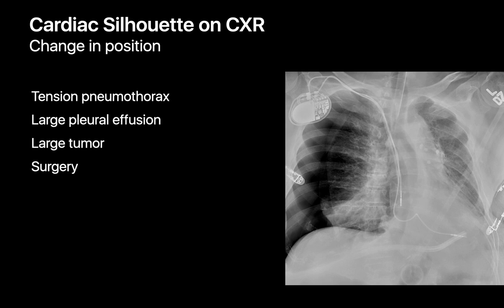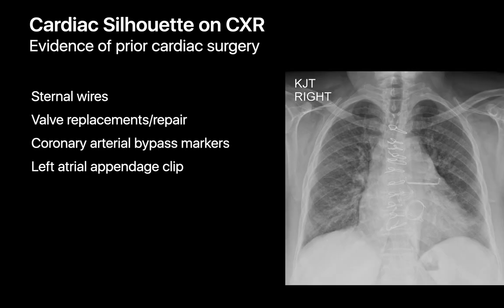Changes in the position of the heart in the chest can sometimes serve as indicators for the presence of an emergency, like a tension pneumothorax, or important issues like a large tumor or a large pleural effusion. Finally, radiopaque structures visible on a patient's chest radiograph can tell us a story about their cardiac surgical history in much less time than it sometimes takes to log into the EMR.